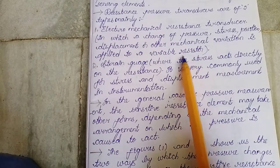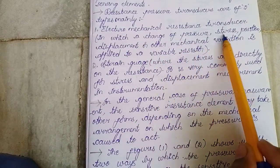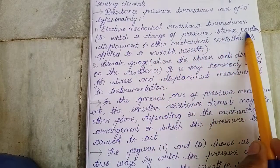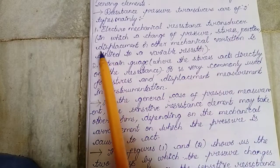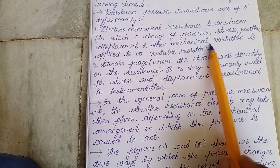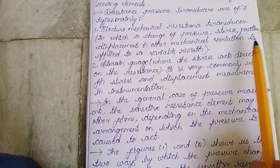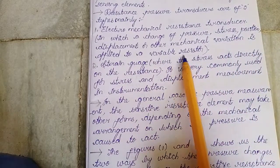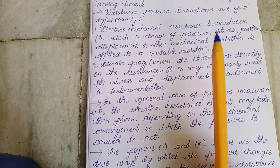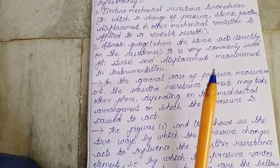The resistance varies according to the change in pressure, stress, position, displacement, or any other mechanical variation which is applied to the variable resistor. This is one type of resistance pressure transducer.